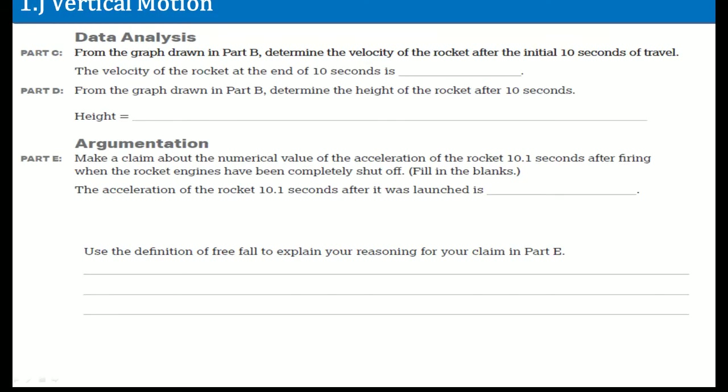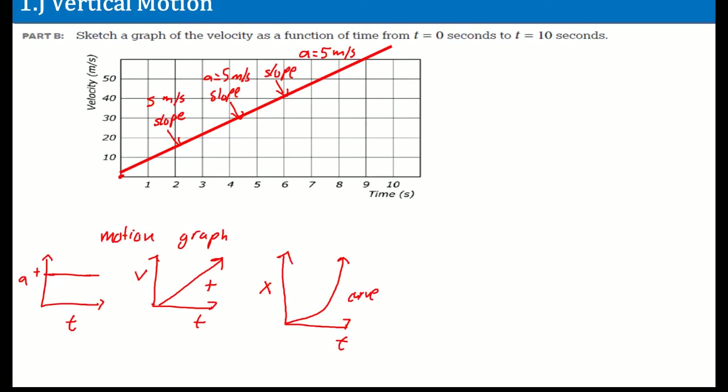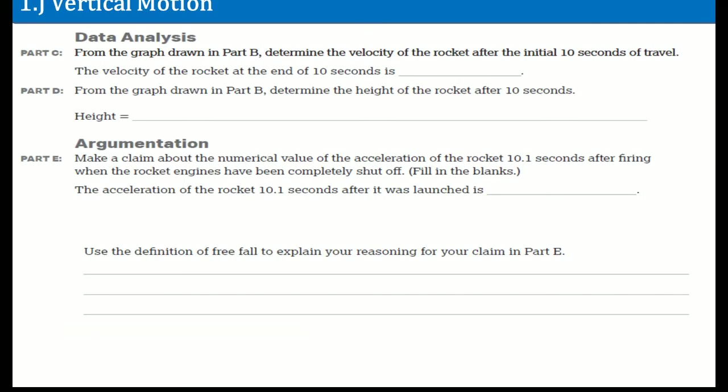Now, from the graph in part B, determine the velocity of the rocket after 10 seconds of the interval. The velocity of the rocket at the end of 10 seconds is what? So if you take a look at the graph, we can see that it ended at roughly 10. The graph was a little off, so let me just do it in a table.